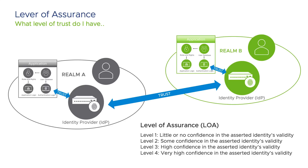You can tie this to the fact that many claims include information about how the user was authenticated. So you may have a trust established between two different realms, but if the user is authenticated using a too weak authentication method, you may decide not to allow access. Many times, you can redirect the user back to its home realm and in the redirect message request a higher level of authentication.